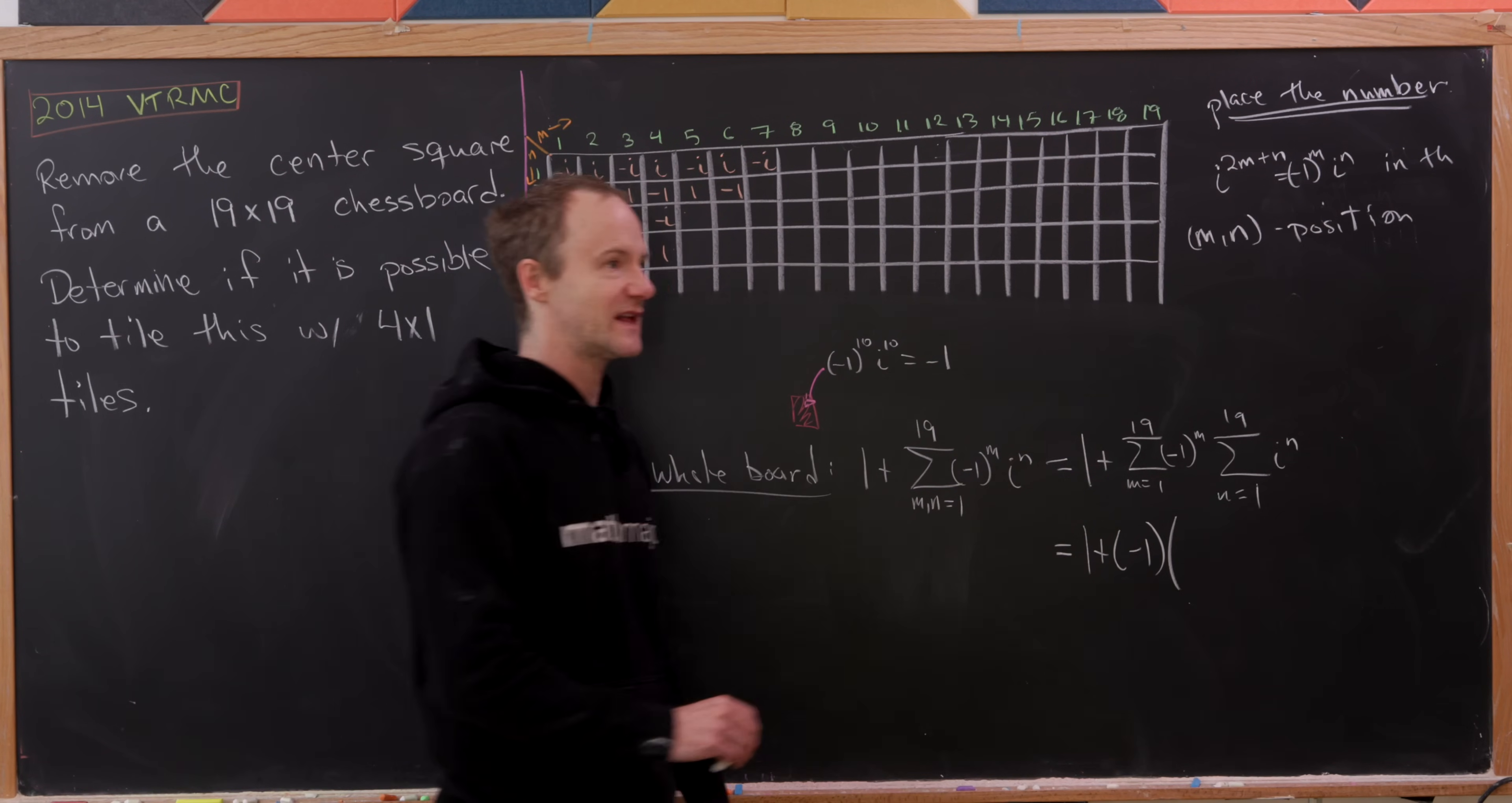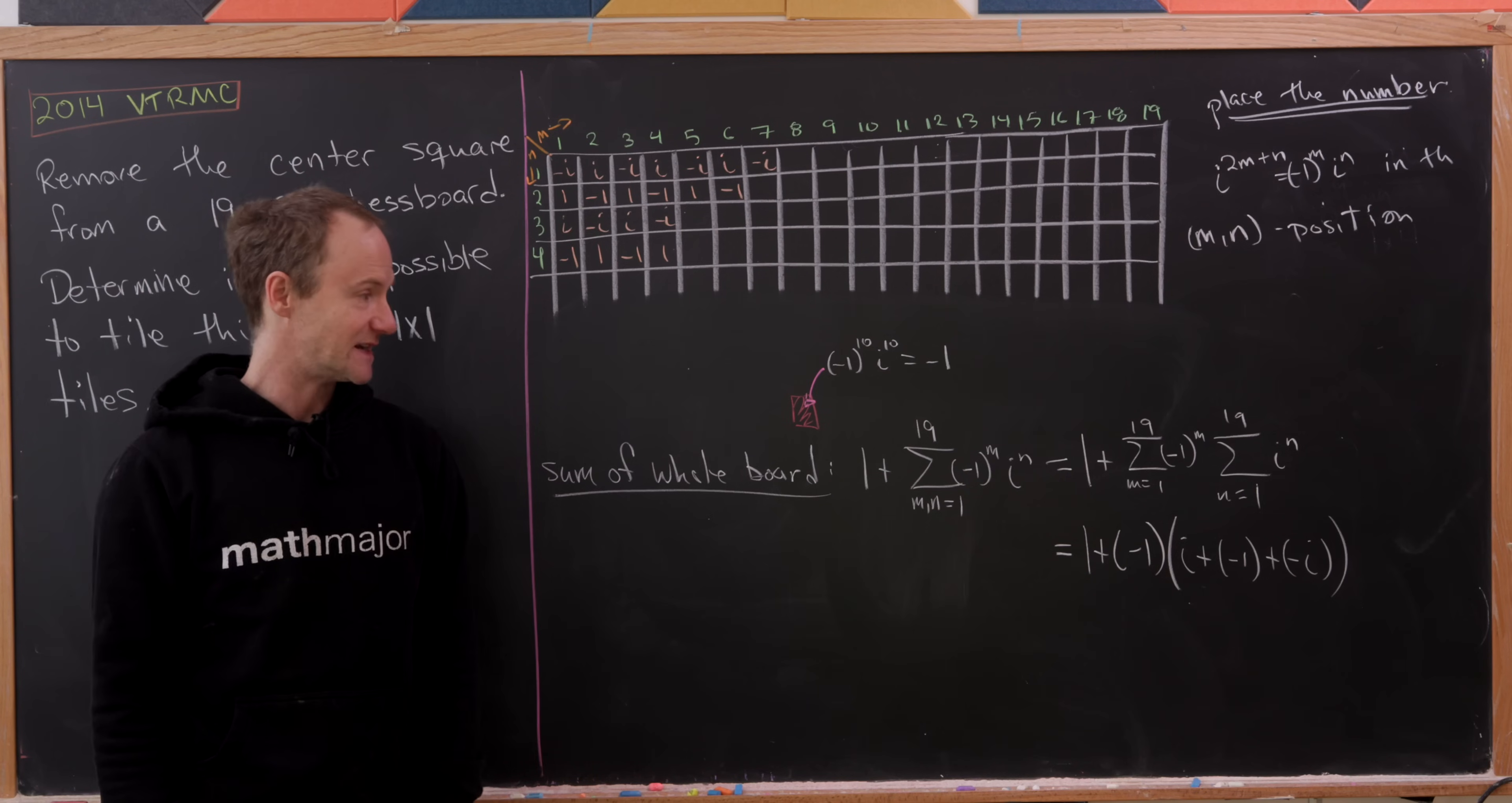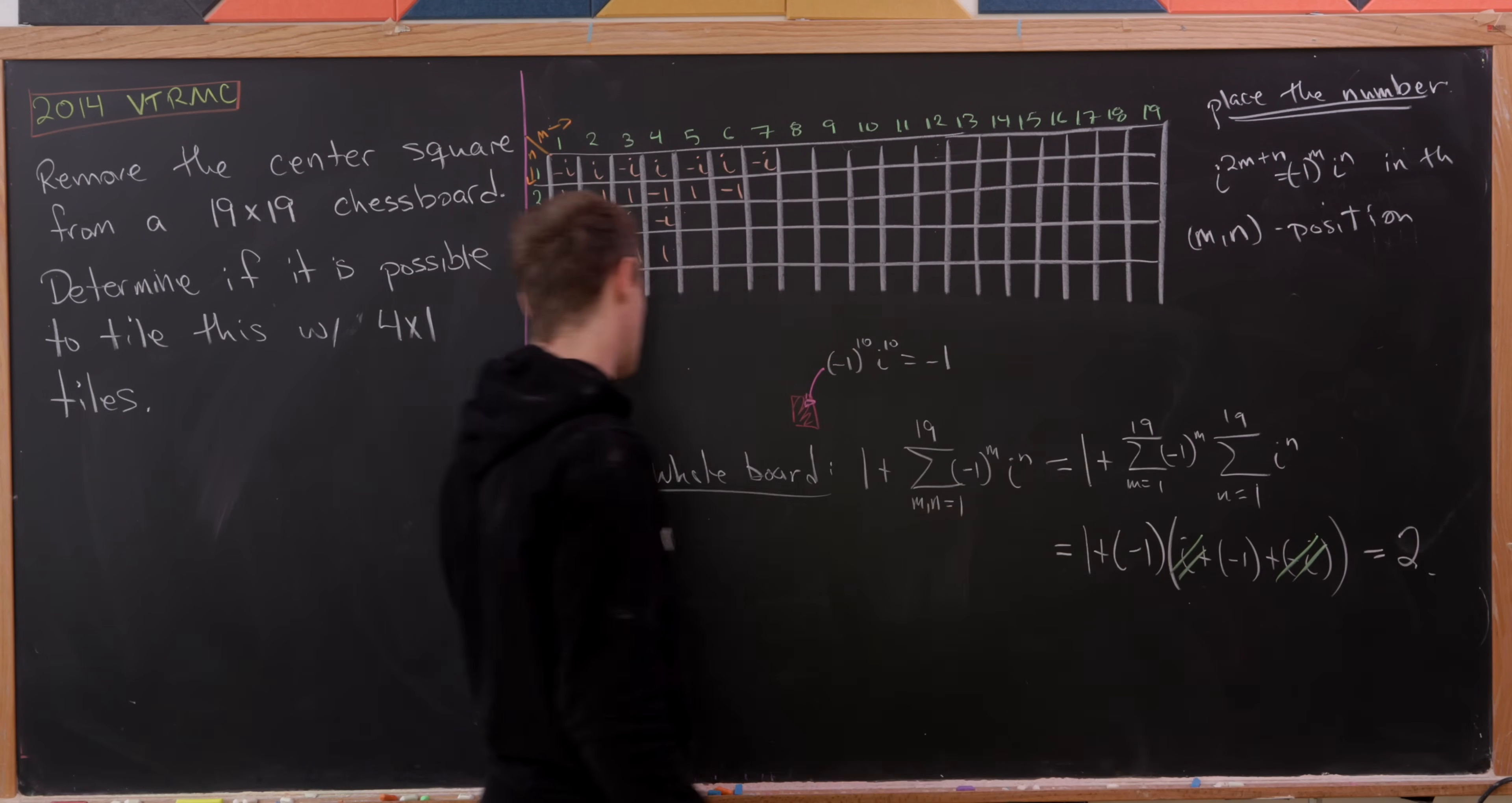plus i squared, which is minus 1, plus minus i, which is i to the 19. So just to reiterate, that minus 1 is really i to the 18 here. Those are the only ones that survive. But observe that this i and this minus i cancel, just leaving us with a minus 1 for that sum as well. So that means all together, we have 1 plus minus 1 times minus 1. In other words, we have the number 2.